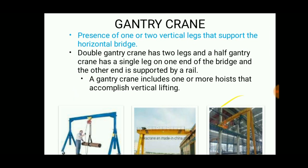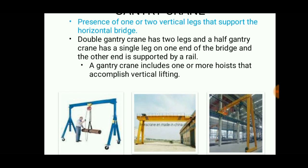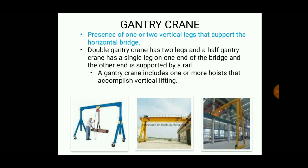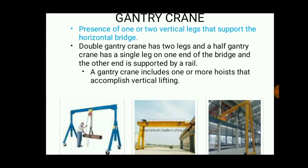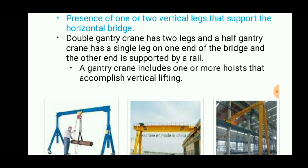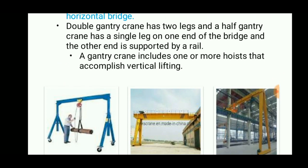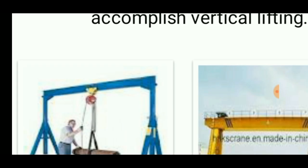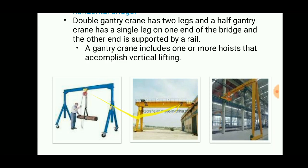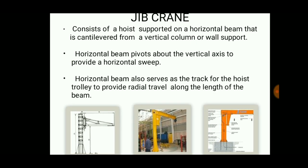The gantry crane is the most commonly used in industries because it can run over a rail system across all X, Y, and Z axes, allowing the hoist to travel over these three axes. It has one or two vertical legs supporting the horizontal bridge — a double gantry crane has two legs and a half gantry crane has a single leg. A gantry crane includes one or more hoists that accomplish the vertical lifting.